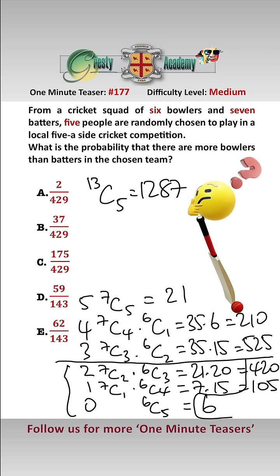And if there were no batters well then we just have to pick all five bowlers out of the six and that is six possibilities. We want those possibilities here: 420 add 105 add 6 which equals 531 over the total number of possibilities 1287.